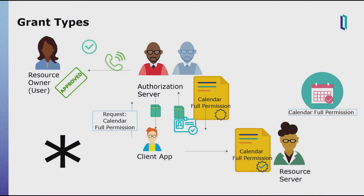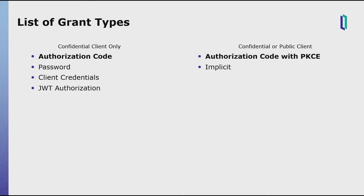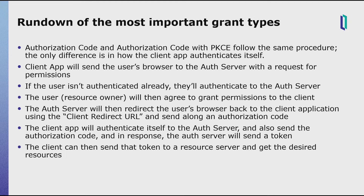Now that we understand public and confidential clients and IDs and secrets, let's talk about the grant types. The variations on flow or procedure of interaction between the auth server, the client, and the resource owner that get followed before the client gets an access token — those variations are the grant types. Many of the differences between the grant types are differences in how the client and the resource owner are authenticated. We've sorted them by which ones are usable by confidential clients and which by confidential or public clients. The really important ones are bolded: authorization code and authorization code with PKCE.